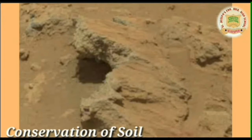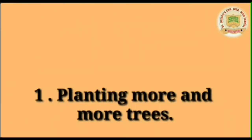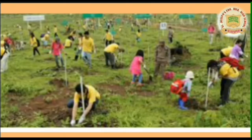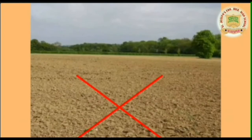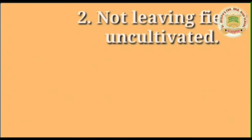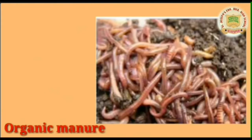The first measure is planting more and more trees. The second is not leaving fields uncultivated — we should grow something in the fields at all times. The third is using organic manure to improve soil quality.